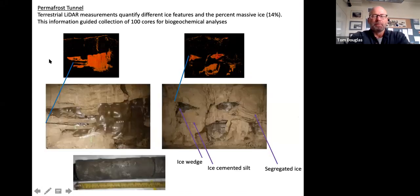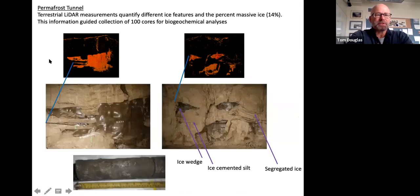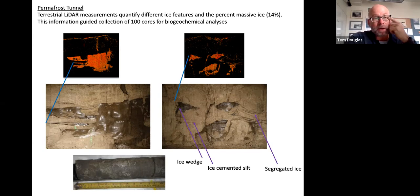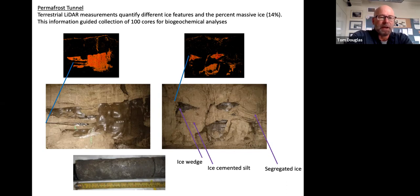At a much smaller scale, we're making LiDAR measurements inside the tunnel. We've excavated about four or five hundred meters of additional tunnel — we tripled the size of it — and we've come across massive ice features. The middle images are true color, and I've labeled ice wedges and silt.